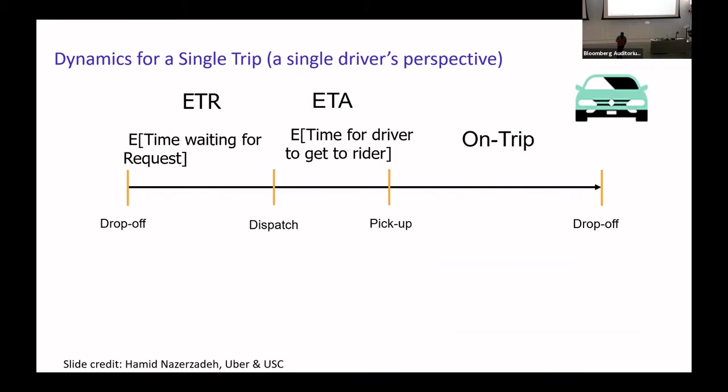This is a far more complicated version of pricing with capacity constraints, because now it's a real-time constraint with time-lag effects. If I allocate a driver right now, they're busy for the next 20 to 30 minutes, and the trip might take them to a different neighborhood. So your supply in that neighborhood is now permanently affected for the next few hours.